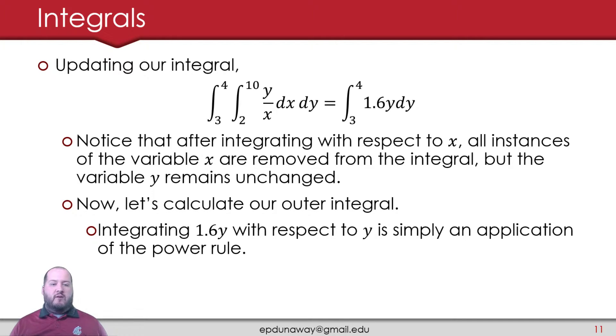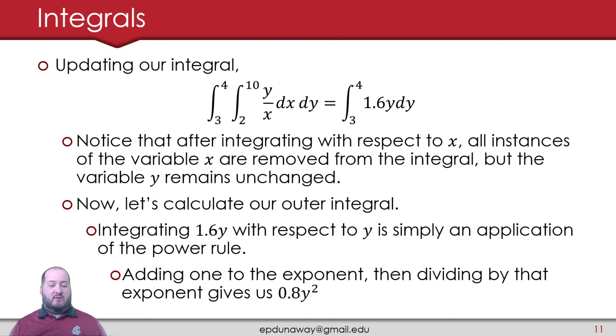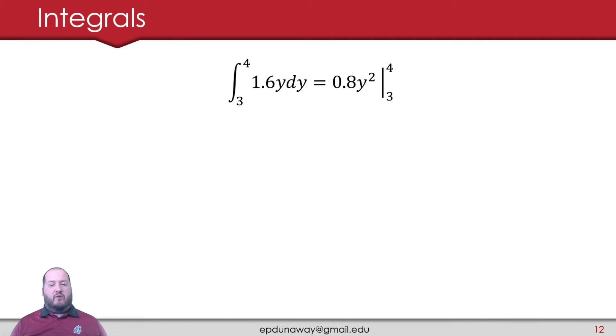We're going to integrate 1.6y with respect to y. It's simply an application of the power rule. We're going to increase the exponent by 1, so y squared. Then we're going to divide by the exponent 2, and that gives us 0.8y squared. That's it. That's all we need to do to integrate that one. So now we're dealing with 0.8y squared from 3 to 4. That tells us that I have those bounds of a definite integral that I still need to consider.